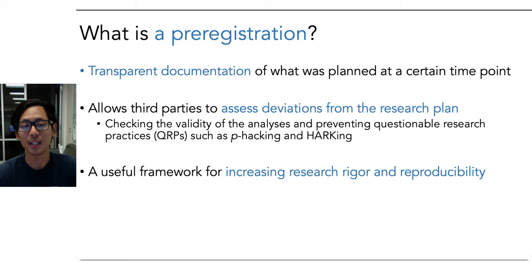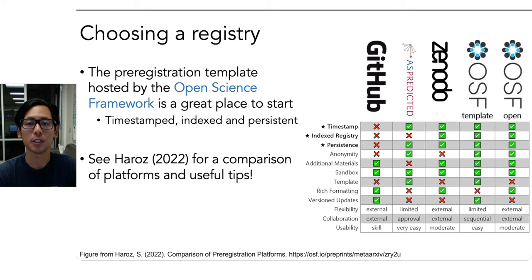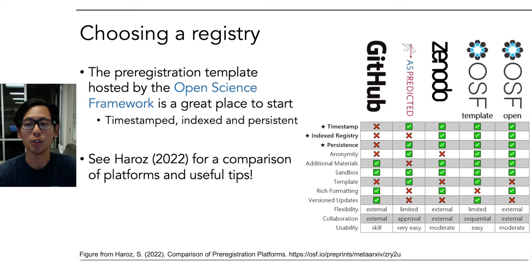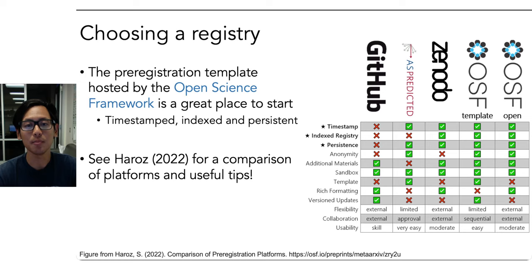Now I'll talk about best practices with pre-registration. The first step is to choose a registry. Popular places to pre-register include GitHub, As Predicted, Zenodo, and OSF — the Open Science Framework. I recommend using the pre-registration template hosted by OSF. It has three key qualities: it is time-stamped, so when you publish there is a time attached to evaluate whether data had already been collected; it is indexed, meaning it's searchable; and it is persistent — once published, it will be archived in perpetuity. Steve Harose has a useful comparison of these platforms in a preprint linked below.